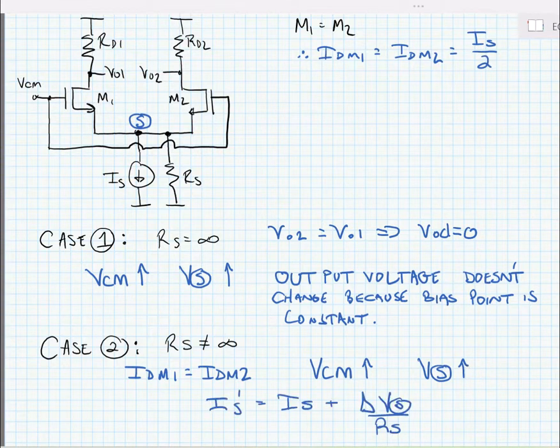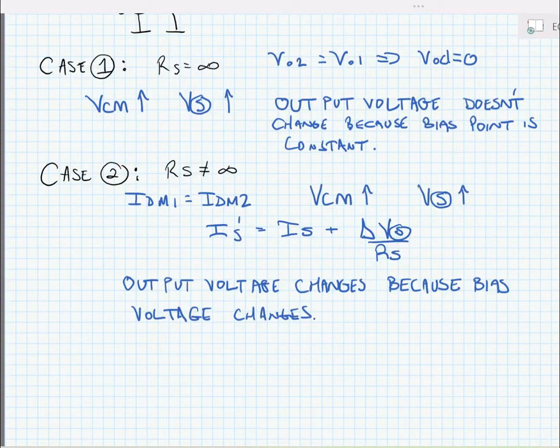In fact, we can say IS prime, the new current, is equal to the original tail current source IS, plus whatever the change in voltage delta Vs, divided by the resistance. So here we can see that the output voltage changes because the bias voltage changes. So if RS is not equal to infinity, in other words, the current source is not ideal, we do see that a change in the common mode voltage results in a change in the output voltages.